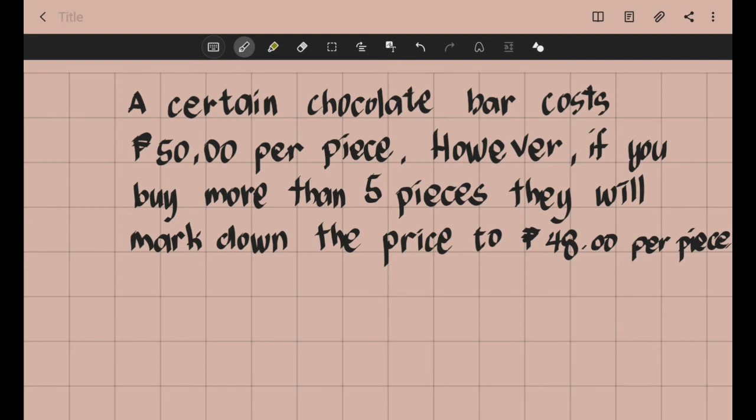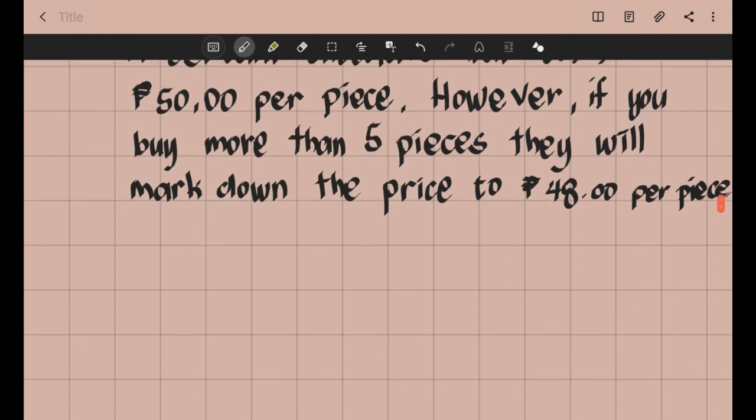If you are to buy 2 pieces of chocolate bars, the price is 50 pesos. But if you buy greater than 5, let's say 7 pieces of chocolate bars, the price becomes 48 pesos per piece. How do we show this using piecewise function?